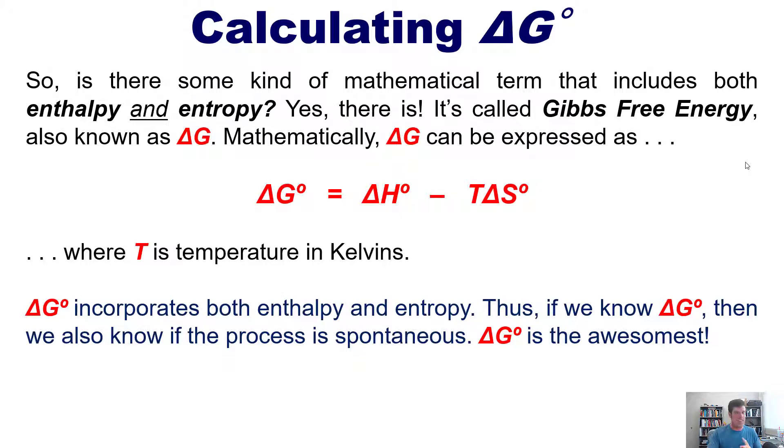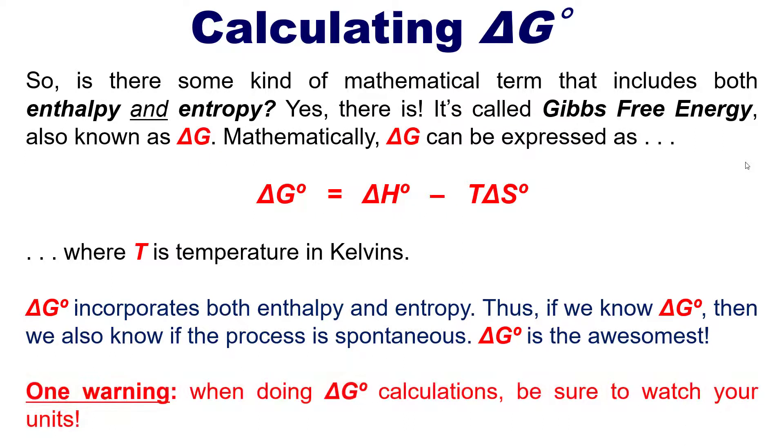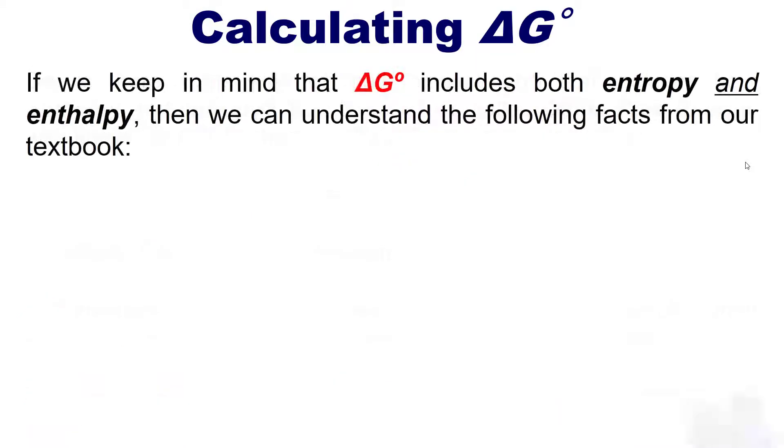Delta G is the awesomest. As a warning though, when doing delta G calculations, be sure to watch your units. So if we keep in mind that delta G does include both entropy and enthalpy, then we can understand the following facts outlaid by our textbook.